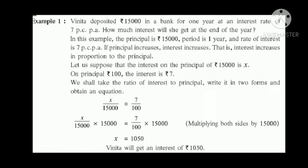Let us suppose the interest on the principal of 15,000 is x. On the principal of rupees 100, the interest given is rupees 7. Therefore, we take the ratio of interest to principal and write it as an equation: x upon 15,000 equals 7 upon 100. We multiply both sides by 15,000 to eliminate it from the denominator, leaving x equal to 7 upon 100 into 15,000. After simplification, x equals 1050. Therefore, Vinita will get an interest of rupees 1050.